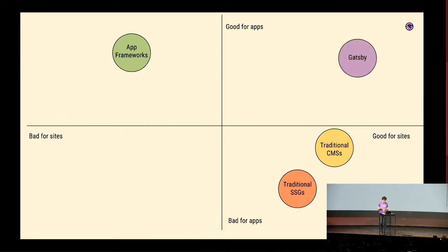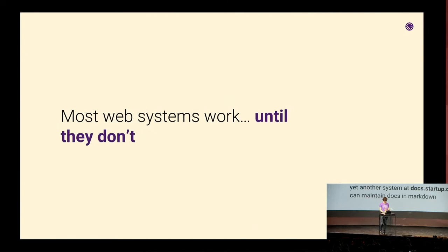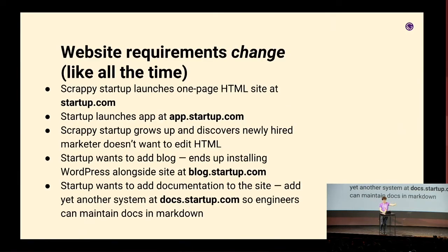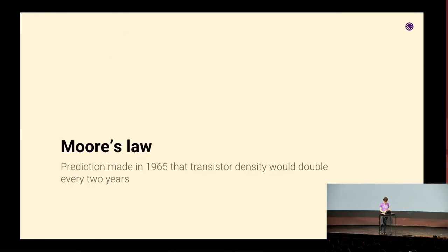And then Gatsby — we're at the top right of the 2x2. Gatsby tries to have excellent support for building sites — all the functionality to handle images, video, lots of content, and lots of screens. You can build really sophisticated UIs with React component architecture. But also, every Gatsby site is a React app, so any sort of app-like functionality is very straightforward. Gatsby solves the dilemma of website requirements growing and running into the limits of old technology — you can launch a one-pager, build your app, add the blog, add docs. It's a flexible toolkit for handling common problems.